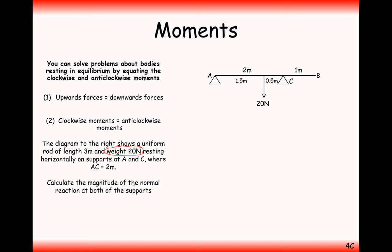The question asks us to calculate the magnitude of the normal reactions at both supports — these are the R forces. These forces might not be the same; the reaction force at C is probably going to be bigger than at A because the centre of mass is closer to point C. Using strategy one, resolving upwards and downwards, we write RA plus RC equals 20.